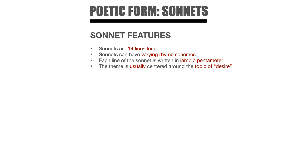From this teaching, you should understand that a sonnet is 14 lines long, it can have a varying rhyme scheme, each line of the sonnet is written in iambic pentameter, and the theme is usually — but not always — centered around the topic of desire. If it's not centered around desire, it's centered around another strong emotion.